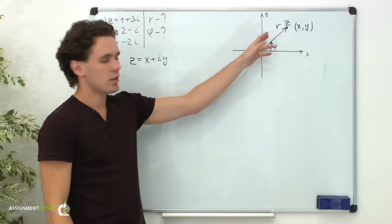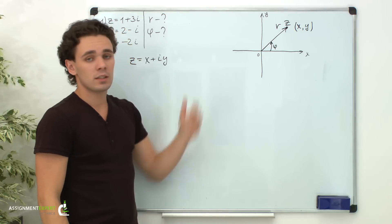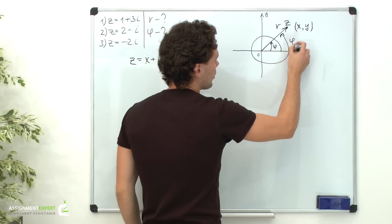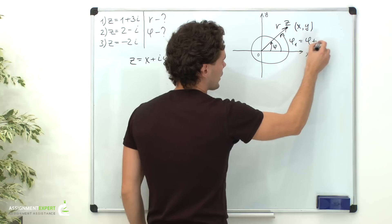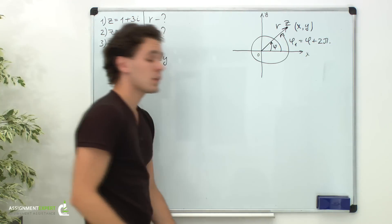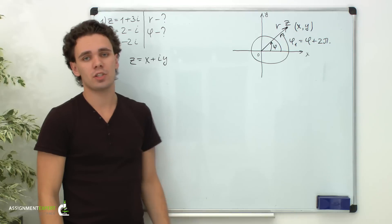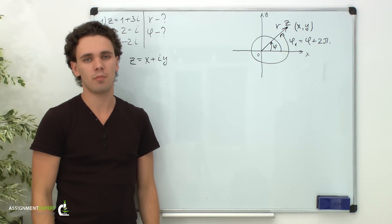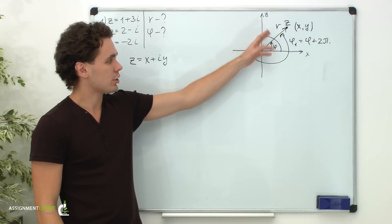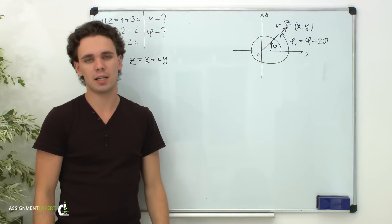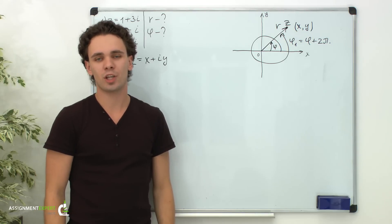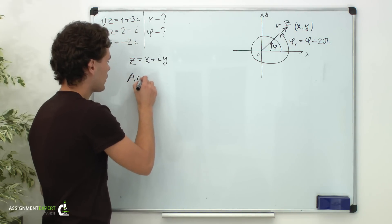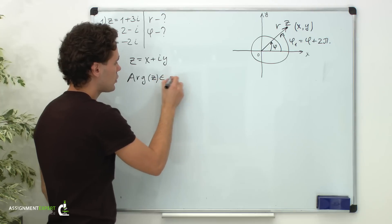Suppose we fully rotate the radius vector around zero. Obviously this is the same radius vector, but we have a new angle phi-1, which equals phi plus 2 pi. So we can conclude that a complete rotation around zero doesn't change the complex number, but we can obtain an infinite number of values of arguments by rotating the radius vector clockwise or counterclockwise. To avoid this ambiguity, we commonly use the principal argument, which is the value of the argument inside the half-closed interval from minus pi to pi.